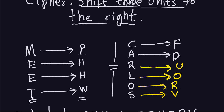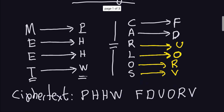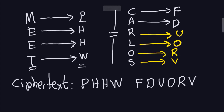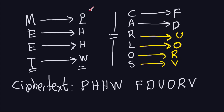I'm trusting that you already know how to do this transformation. So what is going to be the cipher text? The cipher text is going to be all the letters of the message put together after transformation. So it's going to be P, H, H, W, and then the word F, D, U, O, R, V — which corresponds to the transformed word. So that is the cipher text.